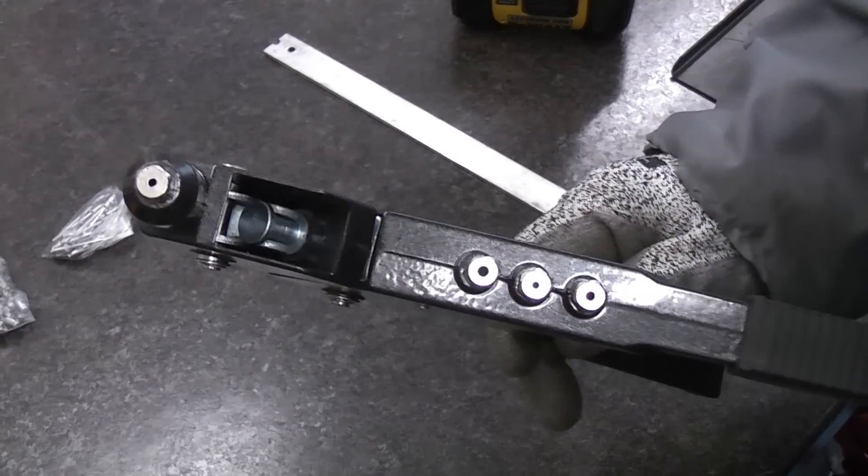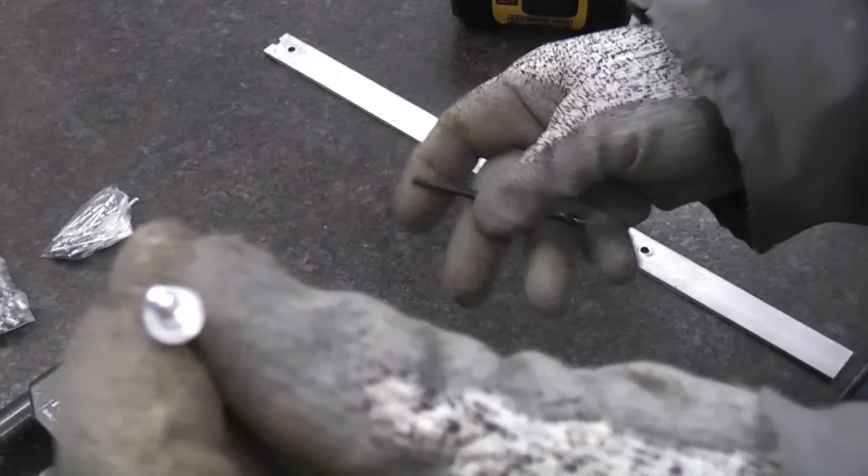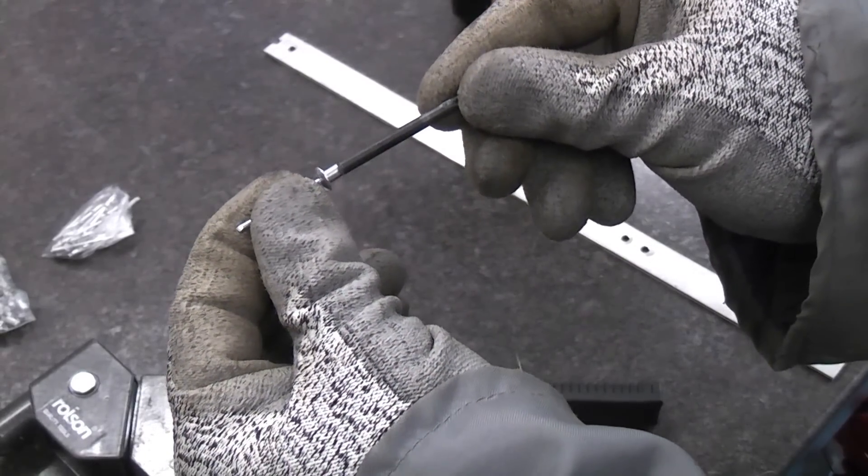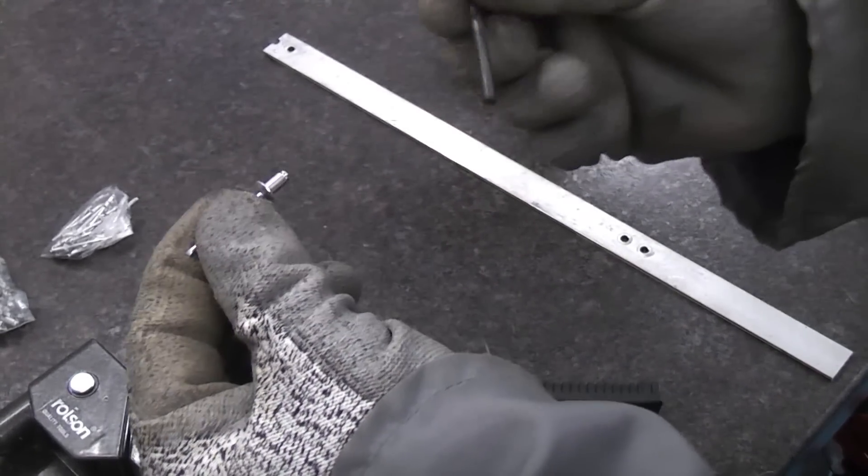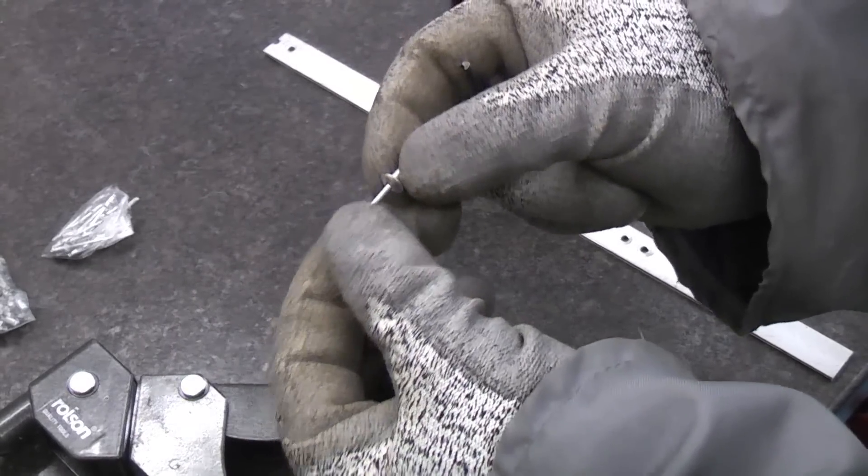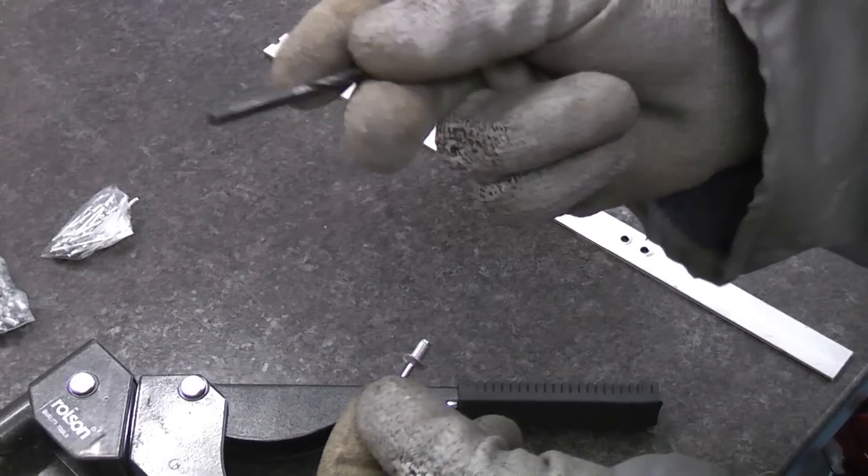Once you've chosen the correct size nozzle for the rivet that you're using, you then need to choose the correct drill bit. If we get that drill bit and hold it against the rivet there you can see that is roughly the right size. If you use a drill bit that's too big your rivet will not hold correctly in the hole that you drill. So it's important that you choose the correct size drill bit.